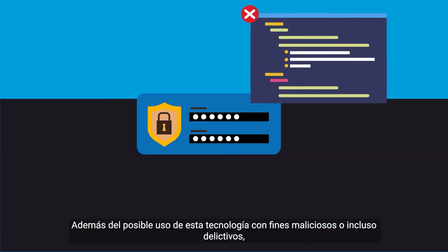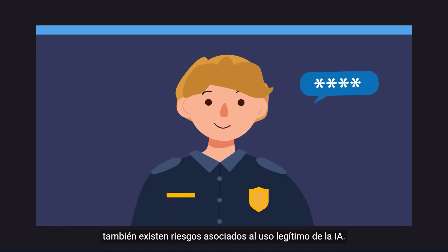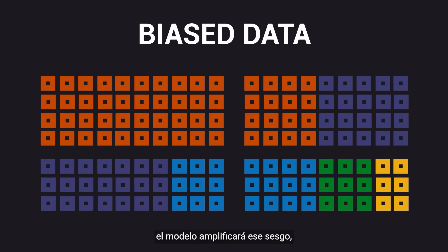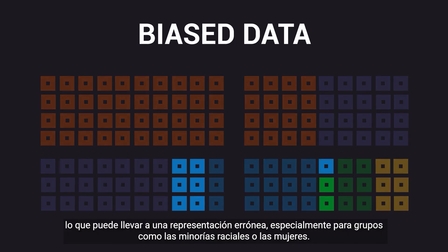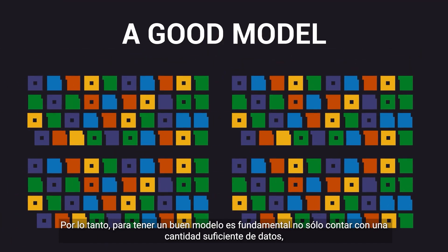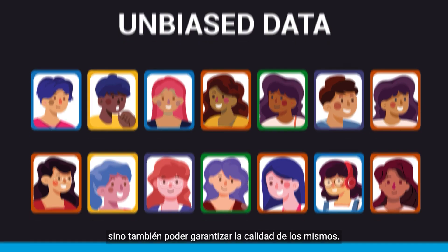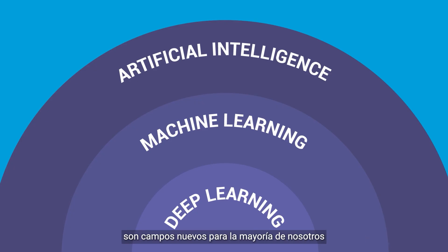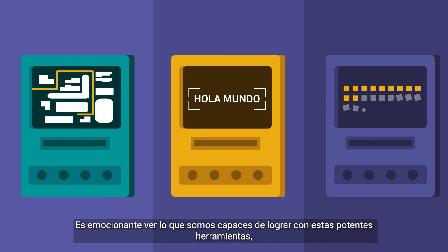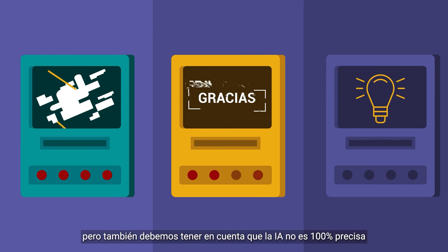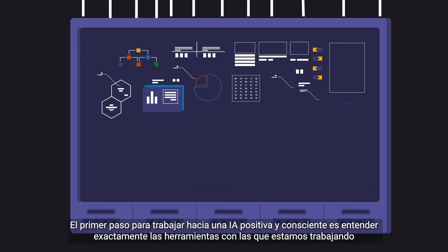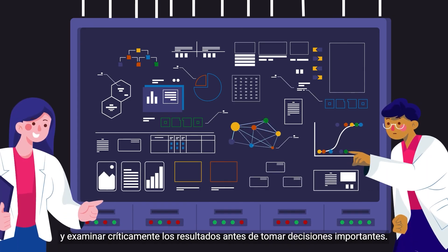Besides the potential use of such technology for malicious or even criminal purposes, there are also risks associated with the legitimate use of AI. For example, if the data on which the AI model is trained contains biases, the model will amplify that bias, which can lead to misrepresentation, especially for groups such as racial minorities or women. To have a good model, it is therefore fundamental to have not only a sufficient quantity of data, but also that the quality of data can be ensured. AI, machine learning, and deep learning are all new and rapidly growing fields. It's exciting to see what we can accomplish with these powerful tools, but we should keep in mind that AI is not 100% accurate. The first step toward positive and conscious AI is understanding the tools we are working with and looking critically at results before taking important decisions.